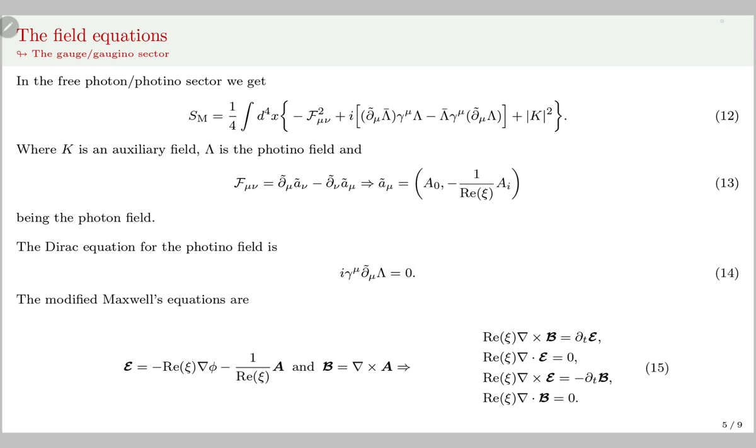With that superaction in hand, the free gauge gaugino sector action is written in equation 12, with the kinetic term for the photon given by 13 and the Dirac equation for the photino in 14, and the modified Maxwell's equation in the presence of the effective electrical and magnetic fields in 15.